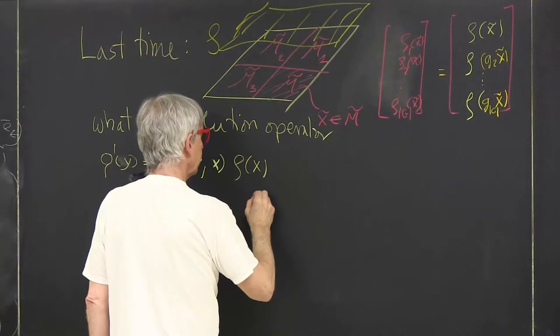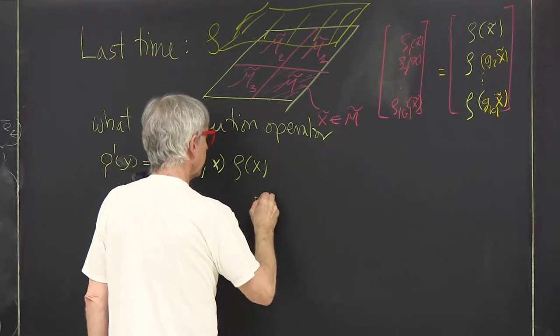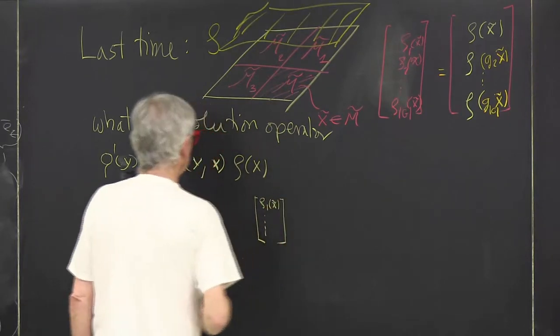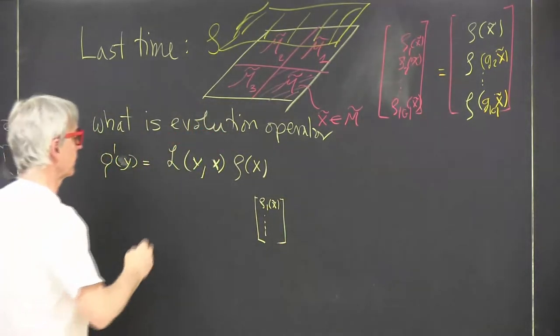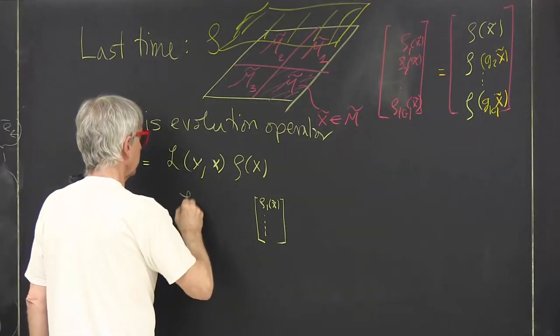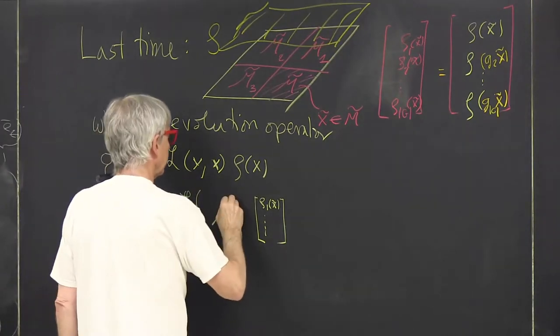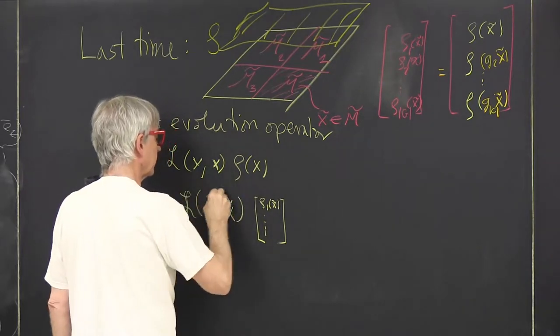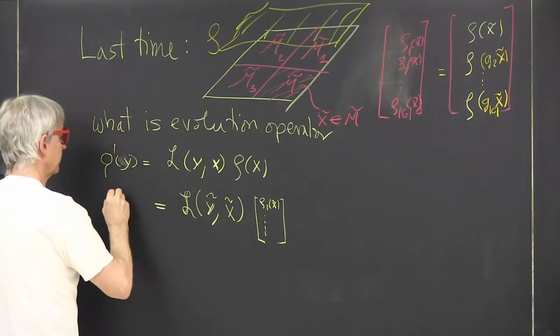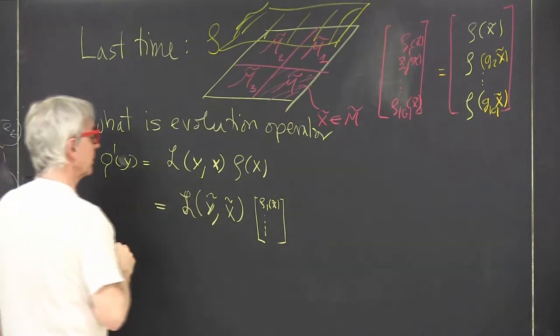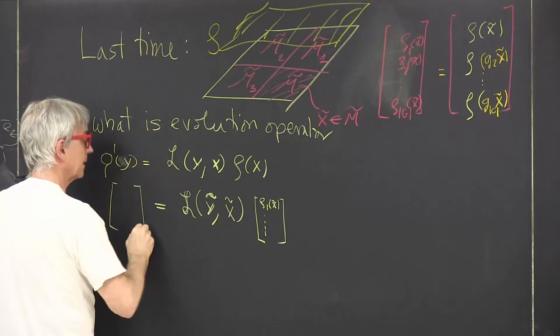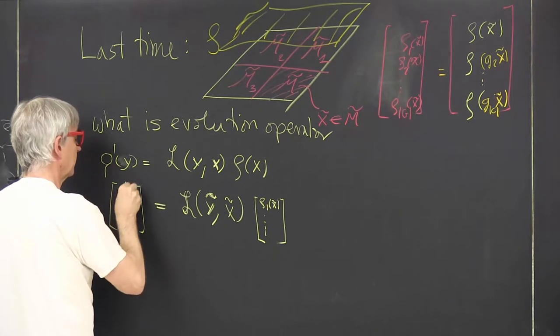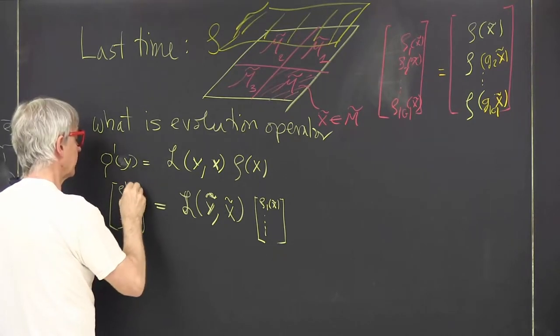Now we have to define a new object which will have to be a matrix, matrix lambda, in which both the initial and final point are on the fundamental domain, and that maps this vector of functions into the next set, all of them defined on the fundamental domain.